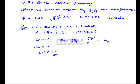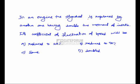In an engine, the flywheel is replaced by another one having double the moment of inertia. Its coefficient of fluctuation of speed will be: reduced to 25%, reduced to 50%, same, or doubled? The coefficient of fluctuation of a flywheel is inversely proportional to the moment of inertia (∝ 1/I). So if the moment of inertia is doubled, the coefficient of fluctuation of speed will be reduced to 50%. The correct option is B.